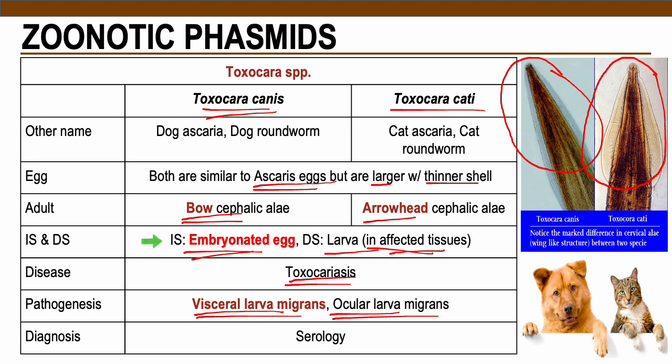This is where the parasite invades the eye area of the patient, causing eye symptoms and eye infections. In terms of diagnosis, since these are zoonotic, they require a more sophisticated method, such as serological methods.